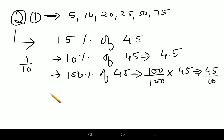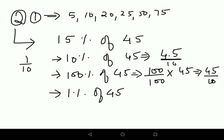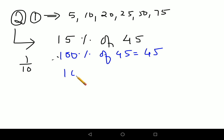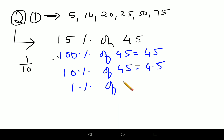1 percent of 45 means dividing 4.5 by 10 again, giving 0.45. So to recap: 100 percent of 45 is 45, 10 percent of 45 is 4.5, and 1 percent of 45 is 0.45. You can divide 45 by 100 or divide 4.5 by 10 — whichever works for you.